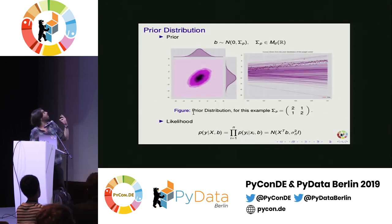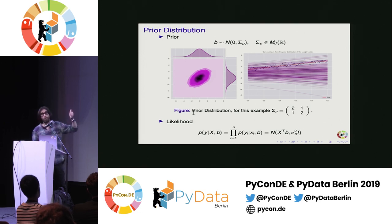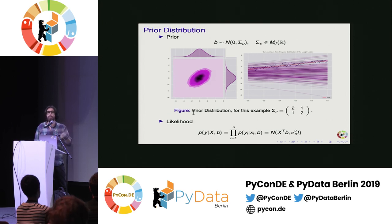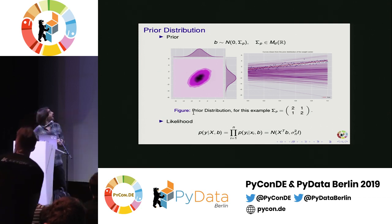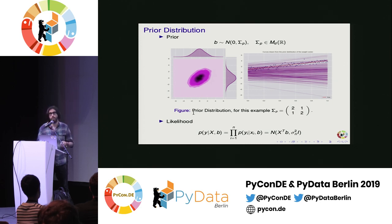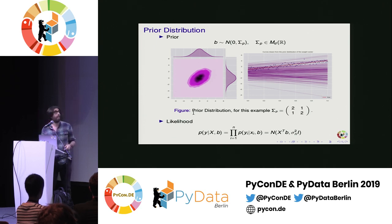For the prior of the parameters, I'm going to select a multinormal distribution, which in this case has dimension 2 — the intercept and the slope. Before seeing the data, I'm going to sample from the prior distribution to see which possibilities I have. I take this specific 2×2 matrix with entries 2, 1, 1, 2 as my prior. I sample from that multinormal distribution, which gives me two values — the intercept and the slope — and I draw a line. Doing this many times gives all these possible lines from my prior specification.